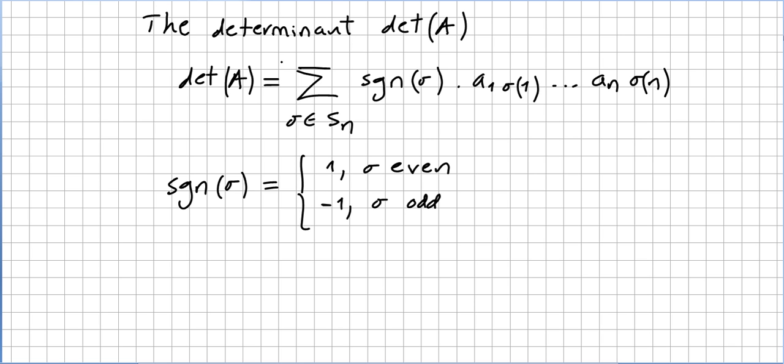So the determinant of a matrix A is, this is a well-known fact so I'm going to be a bit fast here. The determinant of A is the sum over sigma in the symmetric n group, so this will be the sign function times a1 sigma 1, an sigma n.